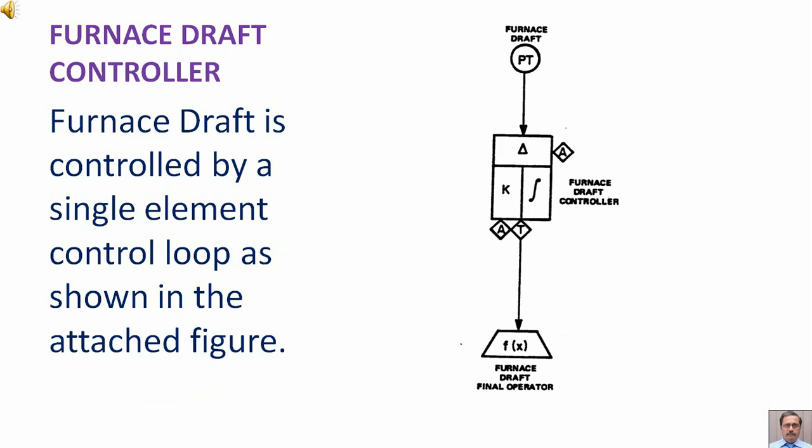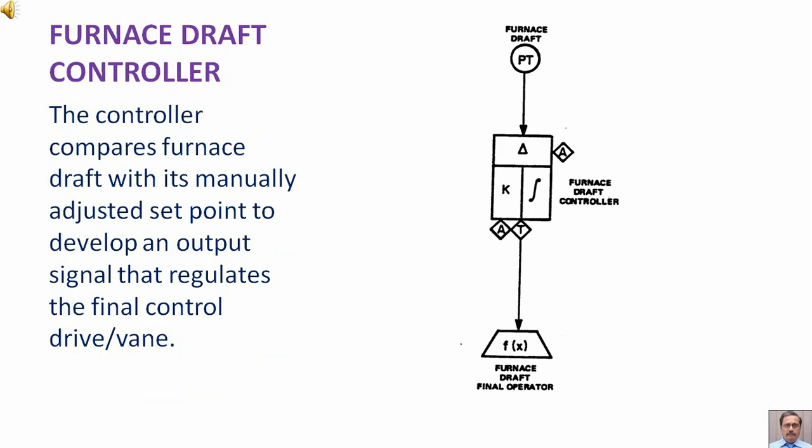Furnace Draft Controller. Furnace draft is controlled by a single element control loop as shown in the attached figure. The controller compares furnace draft with its manually adjusted set point to develop an output signal that regulates the final control drive oblique vane.